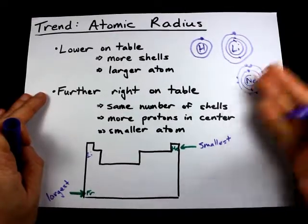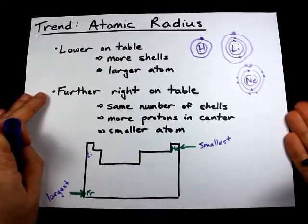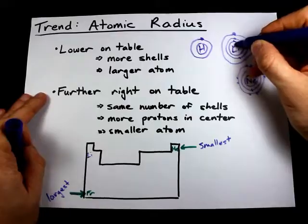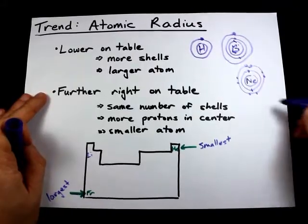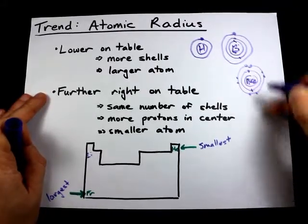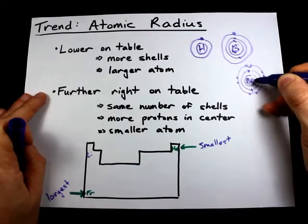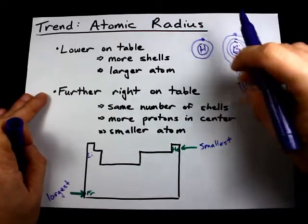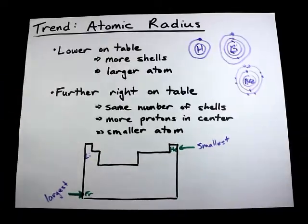Two shells are present in each atom. But lithium has three protons in its center and neon has ten protons in its center, so the electrons in the second shell can be held closer, making the atom smaller.